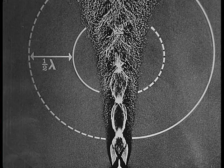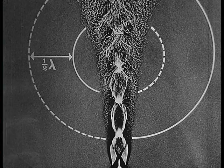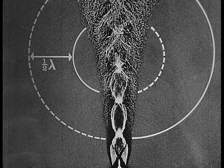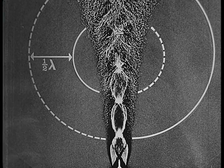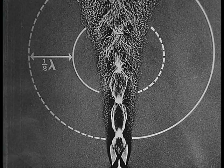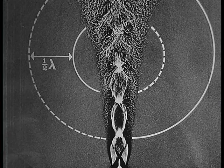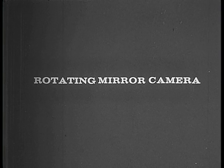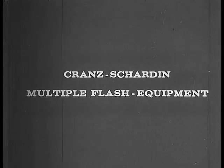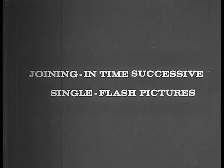The next step to get more information on the phenomenon is to make a film at a speed of, say, one million frames per second. This film can be made in three different ways. One, by means of a rotating mirror camera. Two, by a Kranz-Chardin type camera. And three, by joining in time successive single flash pictures.